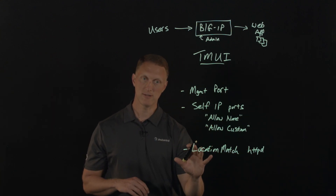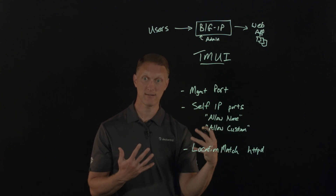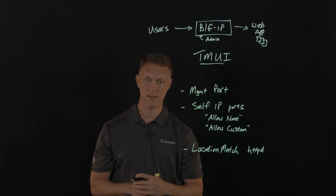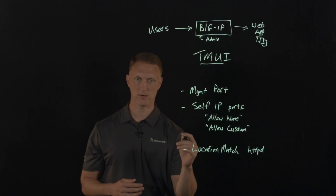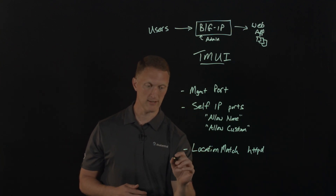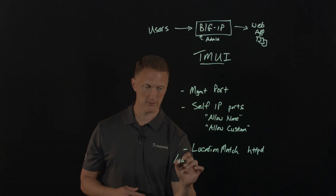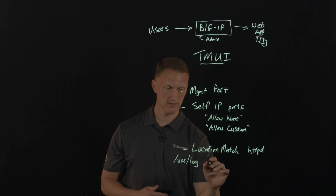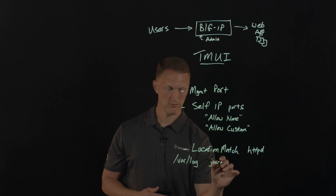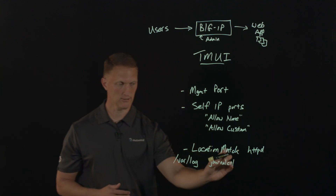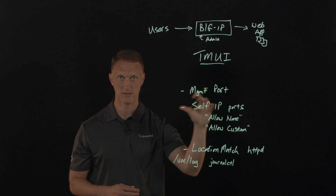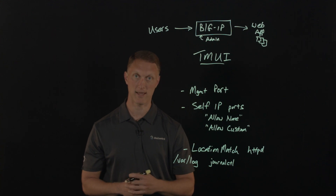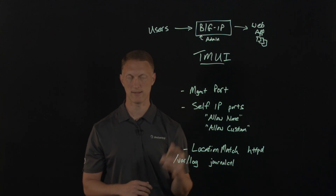Some people ask: how can I look for evidence that an attacker has tried to exploit this vulnerability on my Big-IP? What you can do is search for entries in /var/log on some of the later versions. Also, on some of the newer versions, you can examine the output of journalctl and look there for evidence of an attempted exploit. The details and command syntax for exploring those are also in the security advisory.